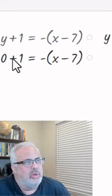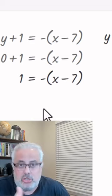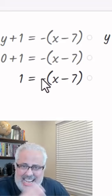Now let's find the x value. Let's isolate the variable x. So let's multiply the negative 1 in front of the parenthesis.